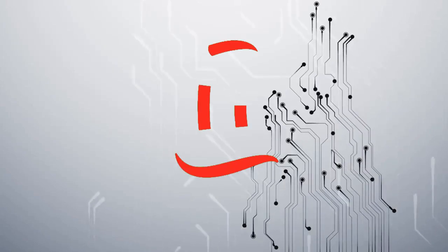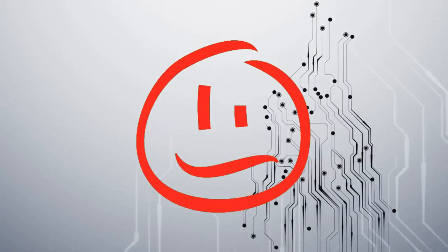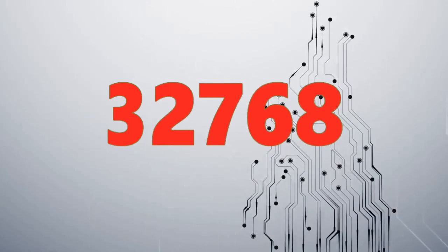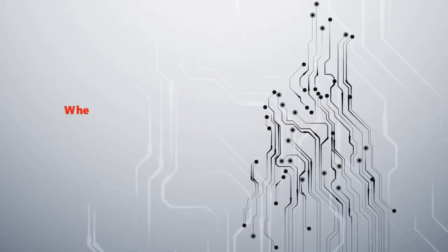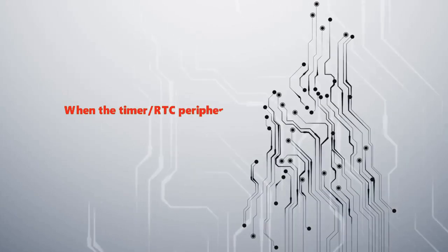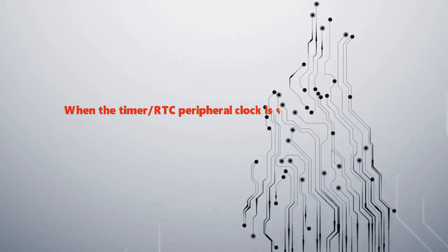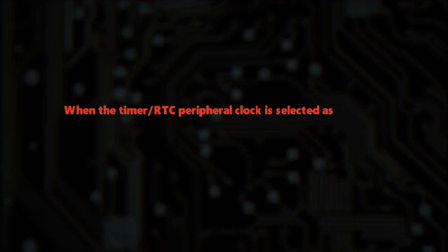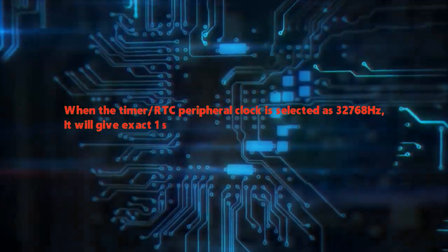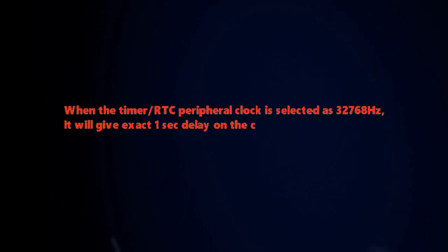Have you ever wonder the magic number 32768 is used. When the timer or RTC peripheral clock is selected as 32768 kHz, it will give exact one second delay on the workflow.